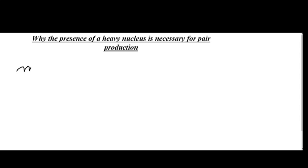In this video, I am going to describe why the presence of a heavy nucleus is necessary for pair production to occur. Pair production is a process in which a fast moving photon converts into an electron and a positron.